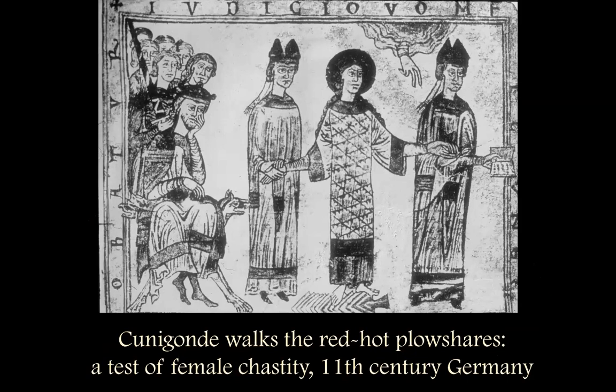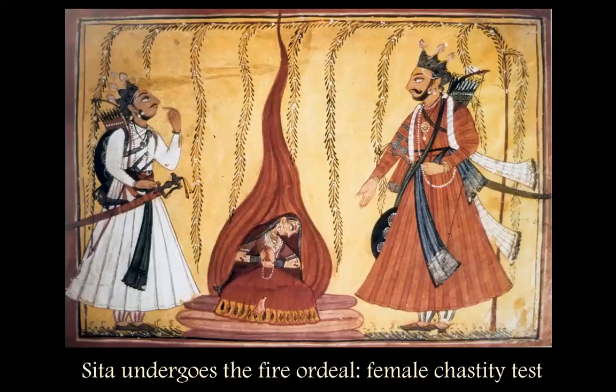Here is Emperor Henry and this is his wife — she's forced to walk, and not even to scamper quickly across the plowshares, but at a measured pace. If her feet show any marks of burns three days later, then she's guilty. It's a rigged deck. The use of fire in European cultures for these chastity ordeals seems to go back a very long way.